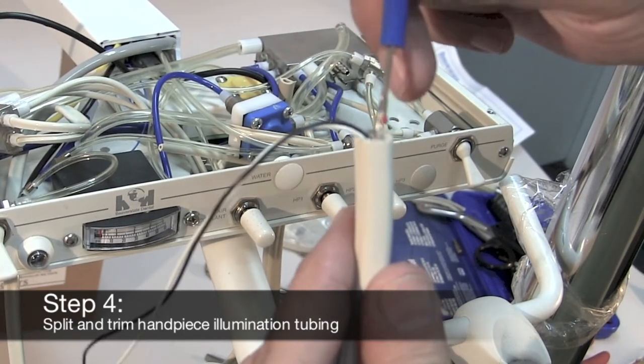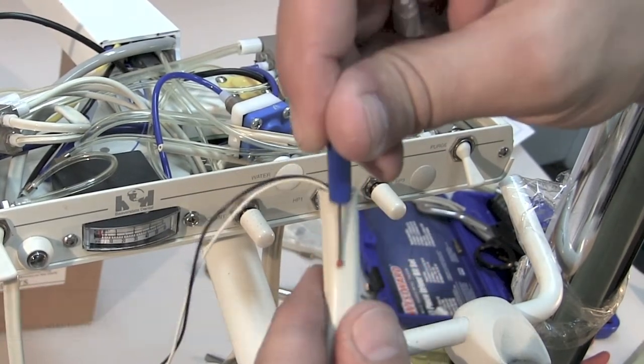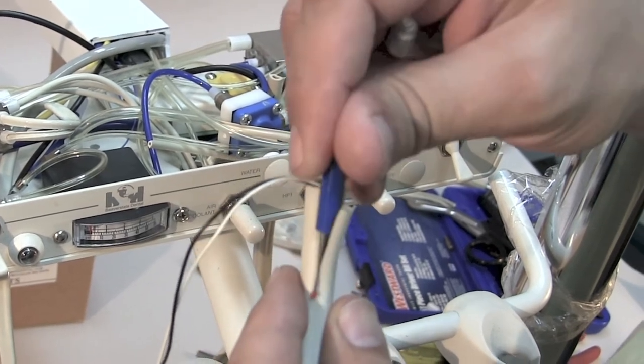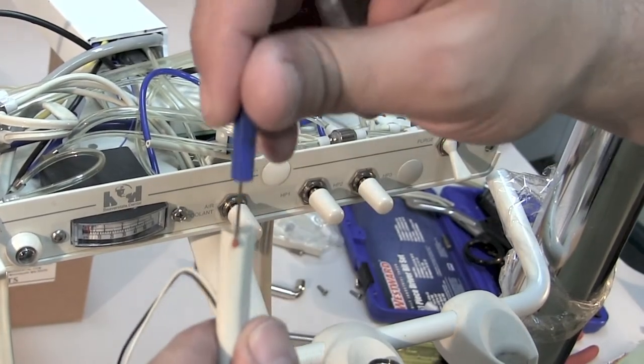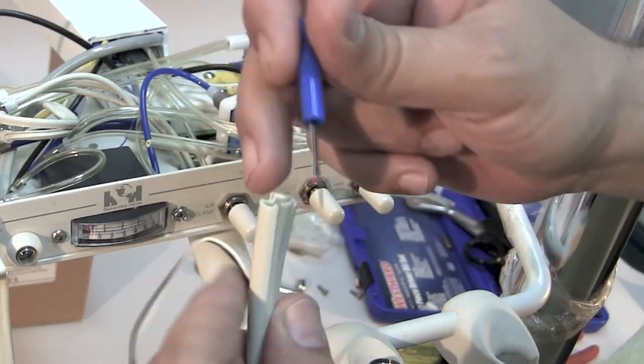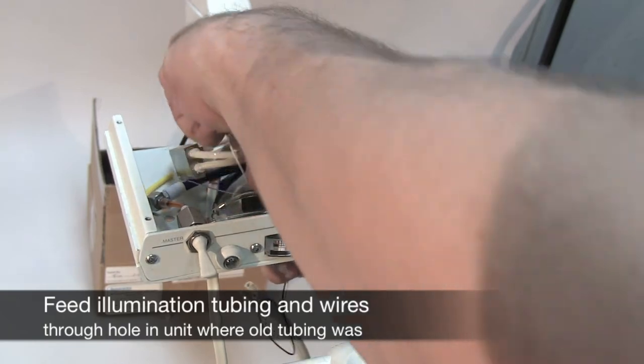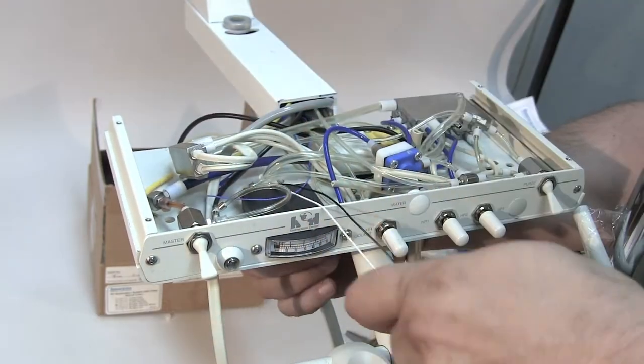Get your illumination tubing, split the lines and trim them to the desired length. Make sure to leave extra length on the wires so that they can reach the air electric control. And feed the tubing through the hole where the old handpiece tubing was, which in our case was in the bottom of the unit head.